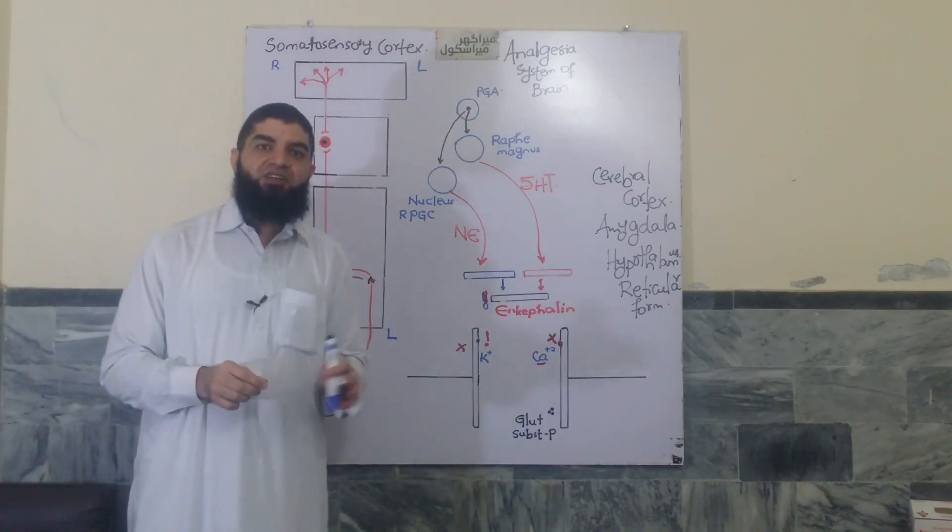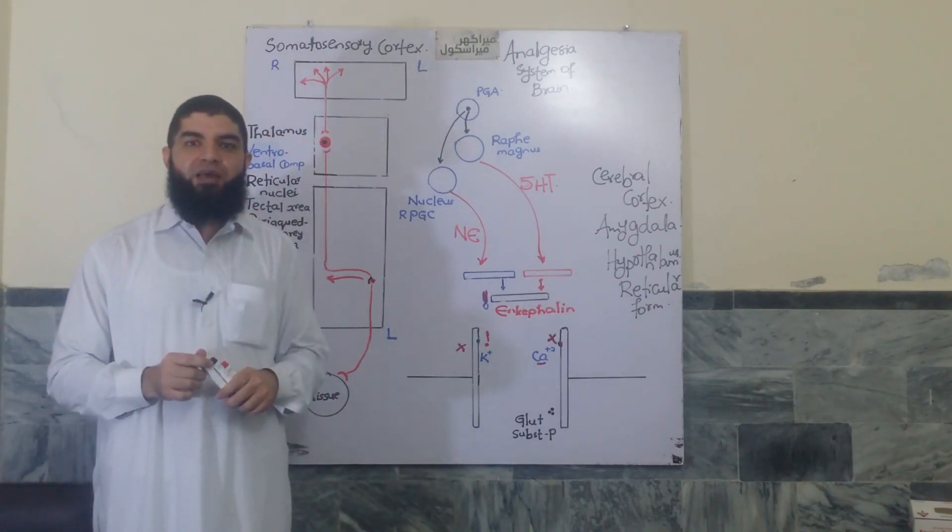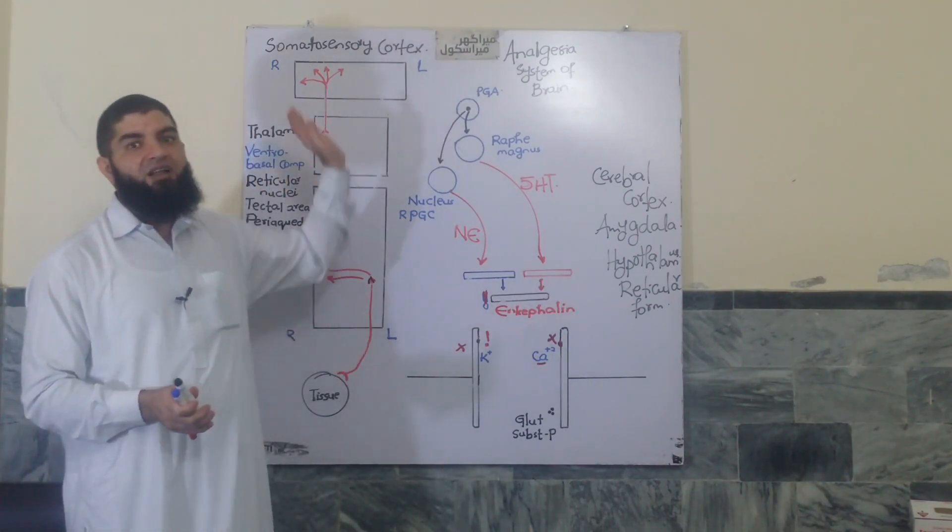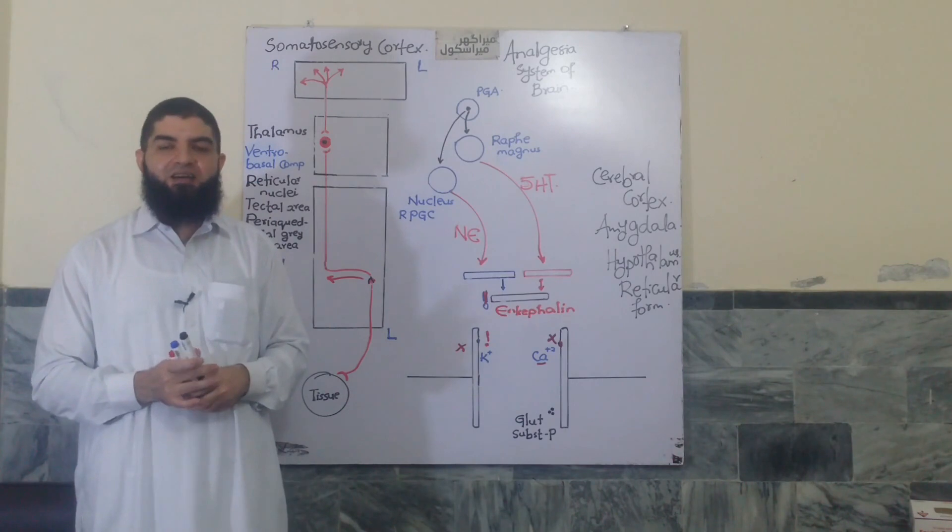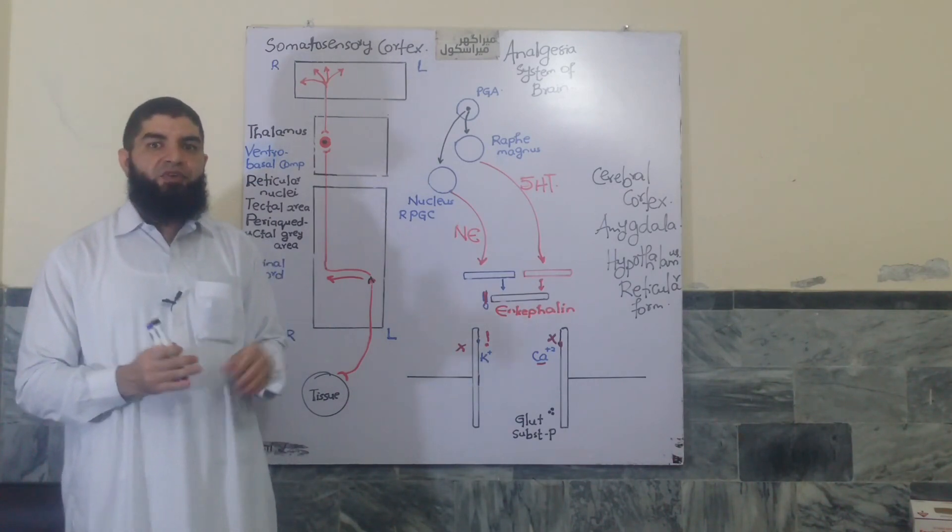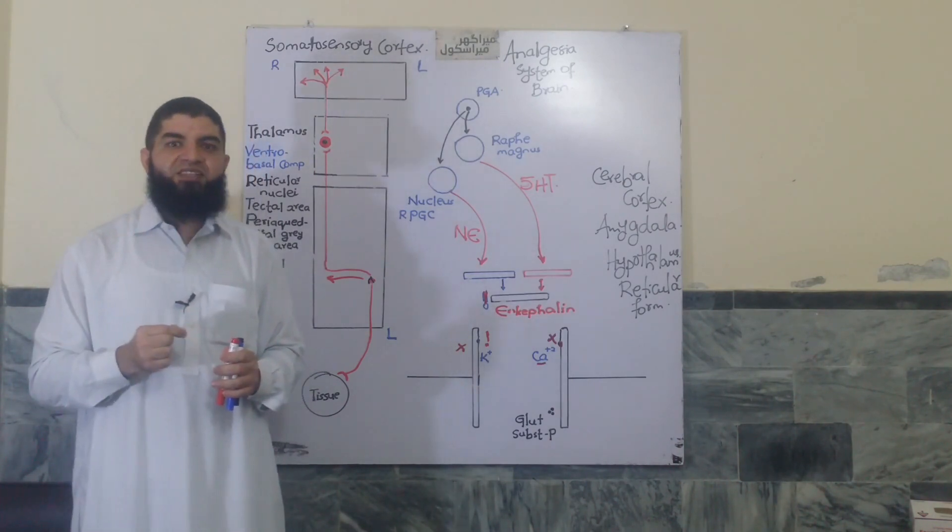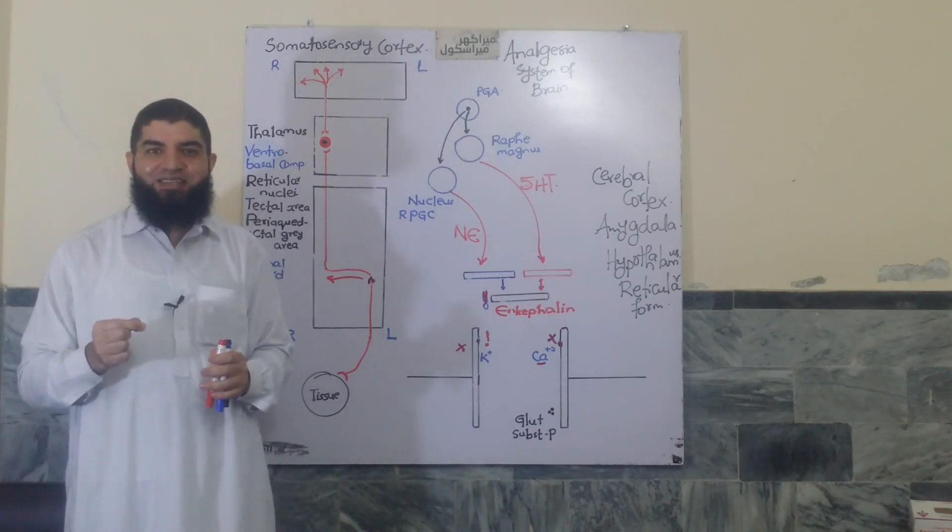But like every system, this system too doesn't offer absolute protection. Some impulses somehow manage to ascend all the way to the sensory cortex and cause disturbance. For those escaping signals, we have one more level of protection. And that is the brain's opiate system.